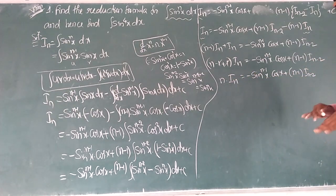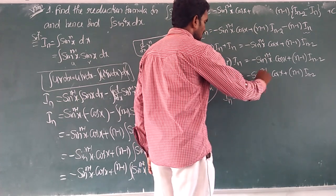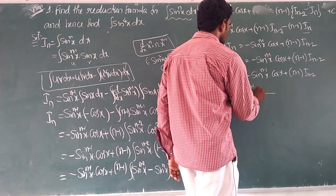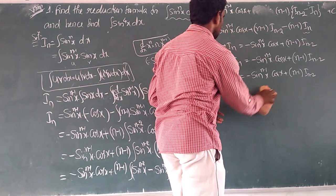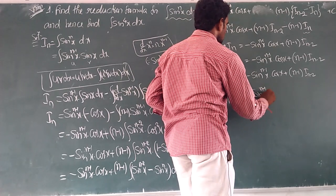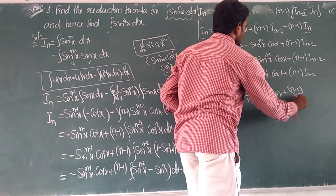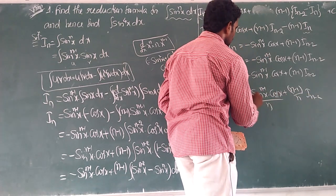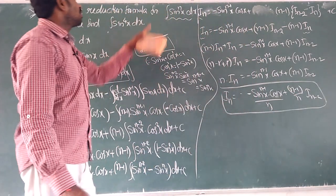So I_n = −sin^(n-1)(x)·cos(x) + (n−1)·I_(n-2) − (n−1)·I_n. Bringing the I_n term to the left side: I_n + (n−1)·I_n = −sin^(n-1)(x)·cos(x) + (n−1)·I_(n-2). Taking I_n common: n·I_n = −sin^(n-1)(x)·cos(x) + (n−1)·I_(n-2). Dividing by n: I_n = −(1/n)·sin^(n-1)(x)·cos(x) + (n−1)/n · I_(n-2). This is the reduction formula for sin^n(x).